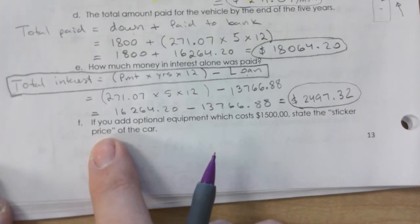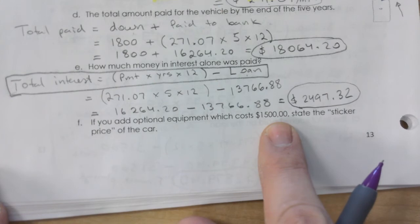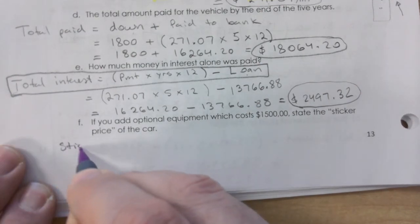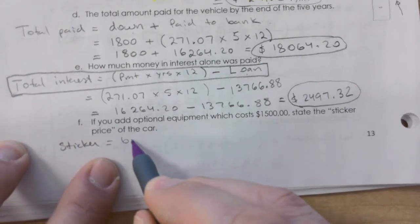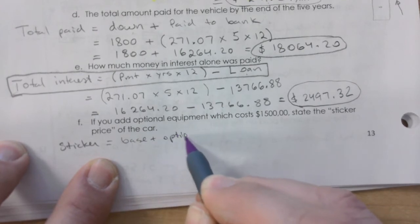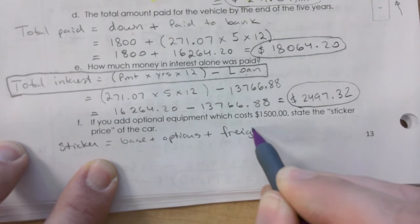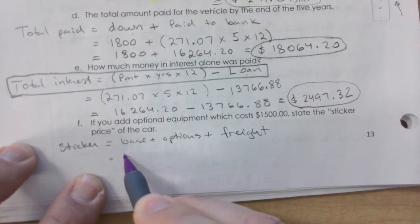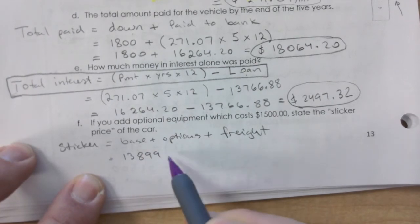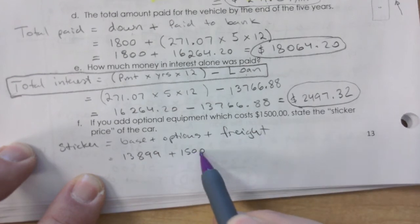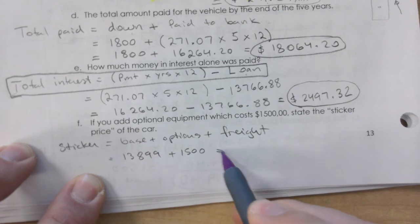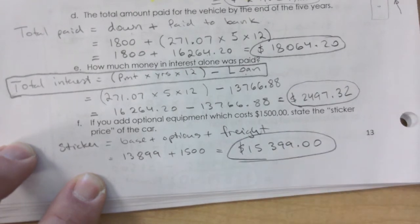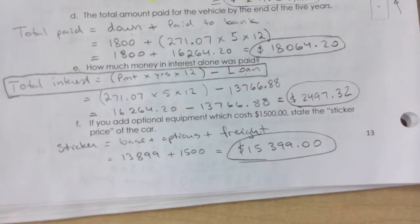If you add optional equipment costing $1,500, state the sticker price of the car. Remember, sticker price equals base plus options plus transportation — no taxes, basically the price before taxes. The base price was $13,899 and the options are $1,500, with no freight mentioned. So sticker price is $15,399. This is just a reminder that sticker price is still relevant.